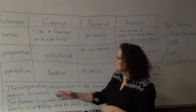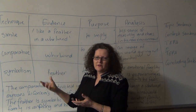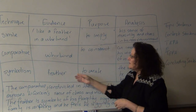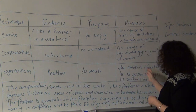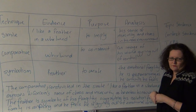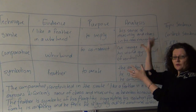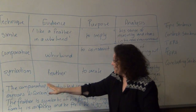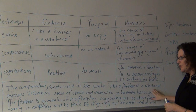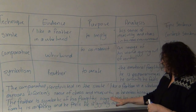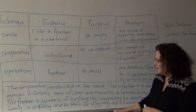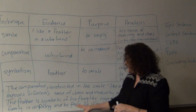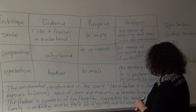We can also build in symbolism — the symbolism of the feather. We know feathers are light, they are transient, and they have no strength of their own. So if we look at the symbolism, the feather is there to create the emotional fragility he's experiencing as he confronts his fears. We can then build up through all of this TIPA one complete response: 'The comparative constructed in the simile, like a feather in a whirlwind, exposes Li Cunxin's sense of chaos and insecurity as he enters his new world. The feather is symbolic of his fragility, suggesting his isolation from his family is confusing and he feels he is jarring out of emotional control.'